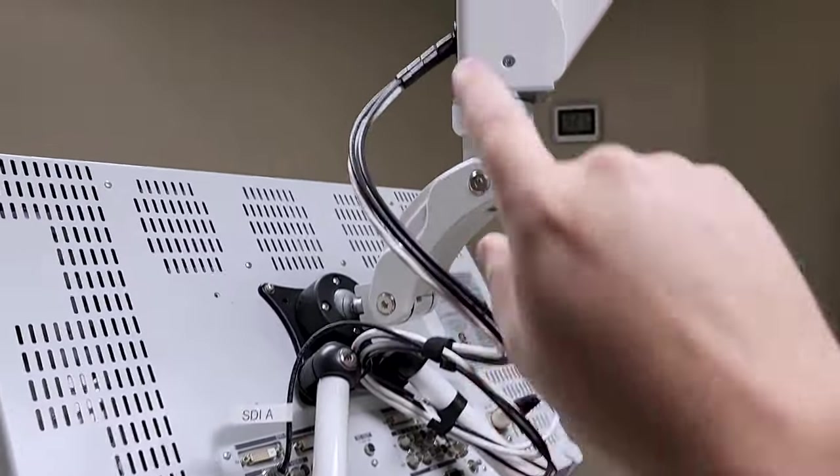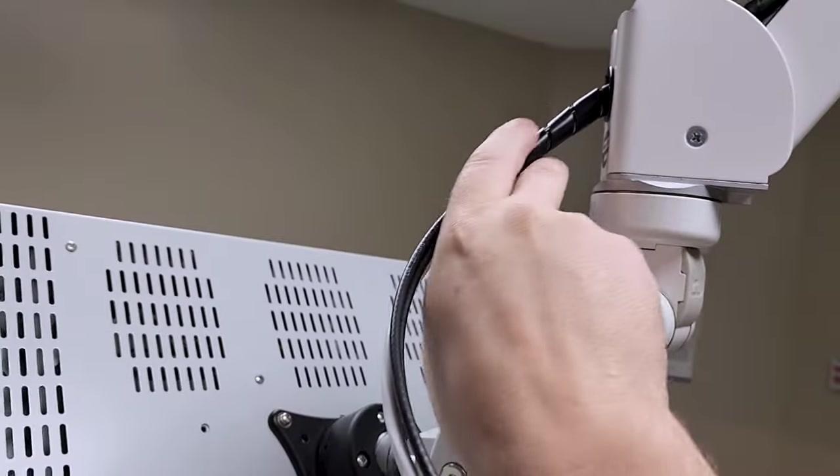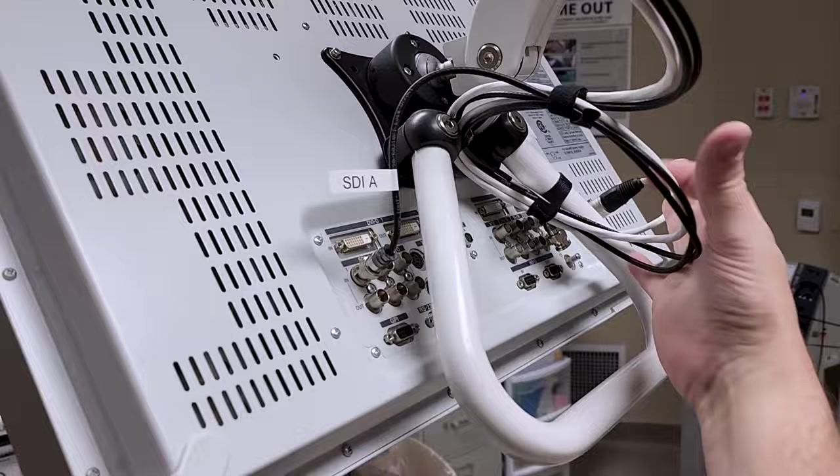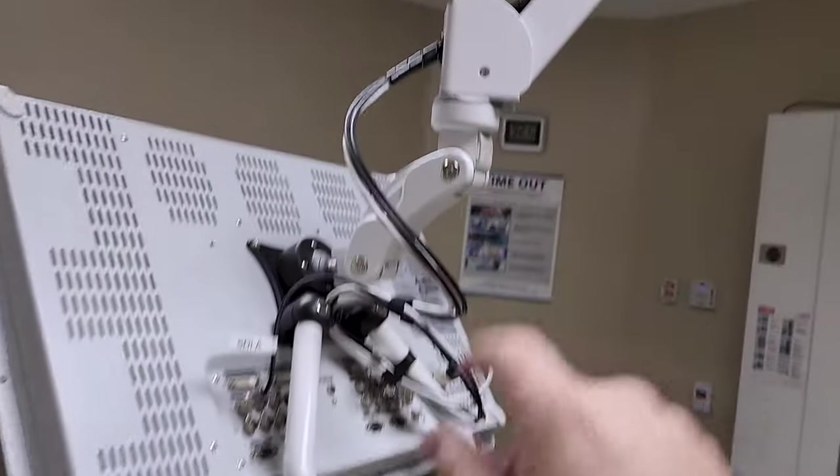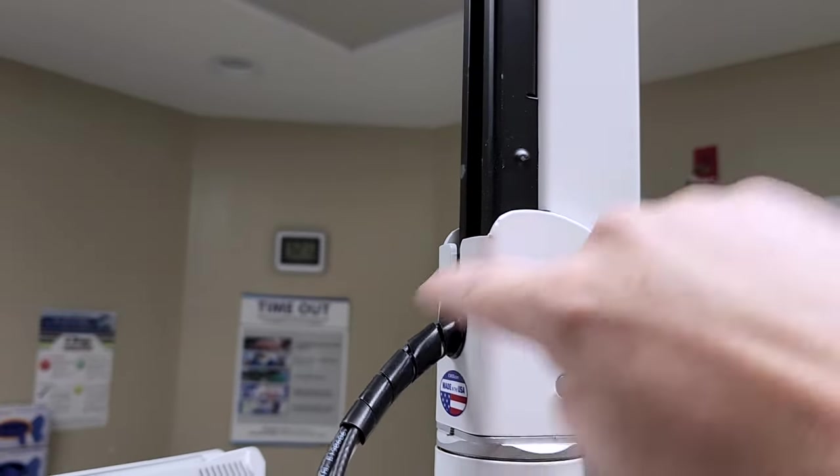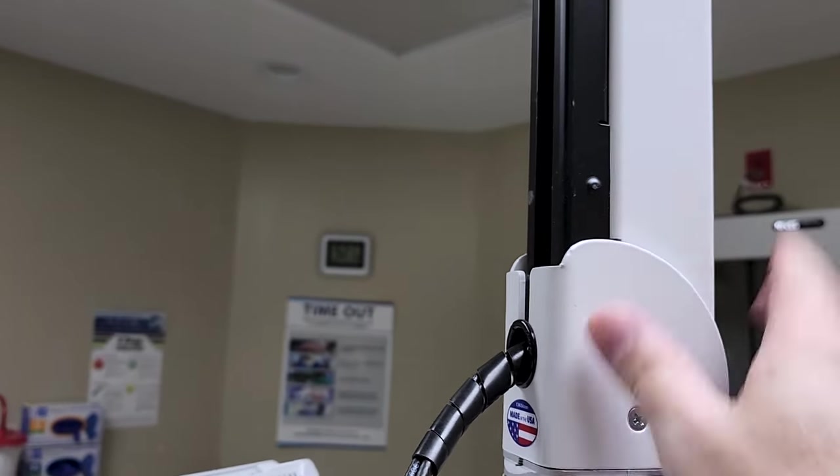But notice how it's got this abrasion resistant band. It was way down here around the loop, which is obviously not where it was intended. It's supposed to be up here where the cable actually rides against metal surfaces.